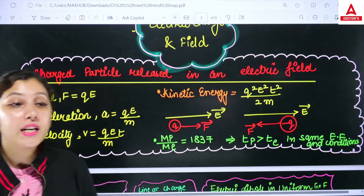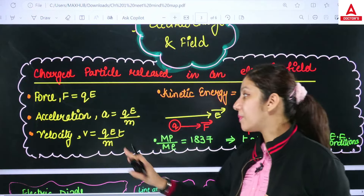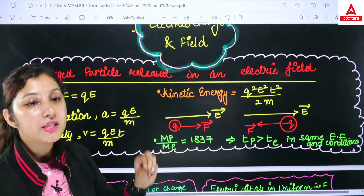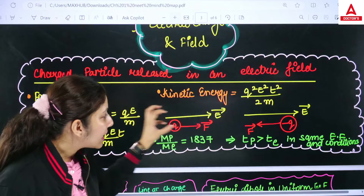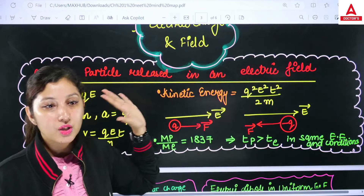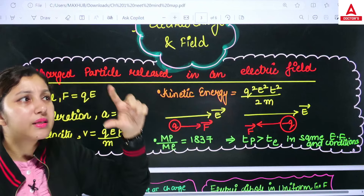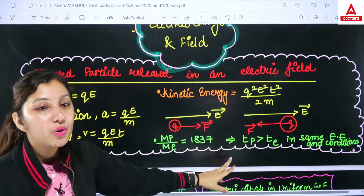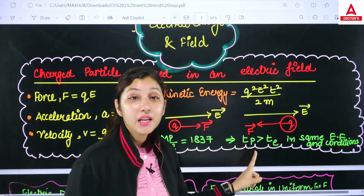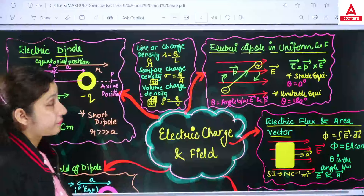When a charged particle is released in an electric field: force = QE, acceleration = QE/M, velocity = QEt/M (i.e., acceleration × time), and kinetic energy = Q²E²t²/(2M). Also note: for a positive charge, force is in the direction of E; for a negative charge, force is opposite to E. The mass of a proton is 1837 times the mass of an electron. In the same electric field and under the same conditions, the time period of a proton is greater than that of an electron.